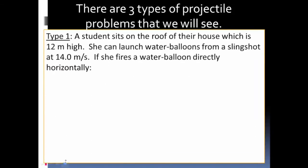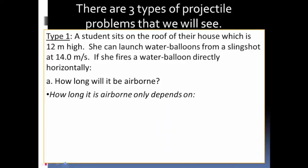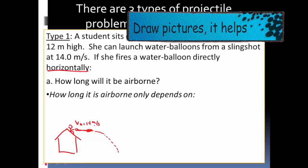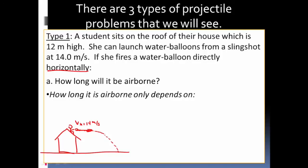Let's get to Type 1. A student sits on the roof of their house, which is 12 meters high. She can launch water balloons from a slingshot at 14 meters per second. If she fires water balloons directly horizontally, how long will they be airborne? The key word here is horizontally — it's not being launched at an angle. So we draw the picture: here's the house, she's on the roof, and the water balloon goes directly horizontal off the roof. That vector vx equals 14 meters per second. The initial height is 12 meters.